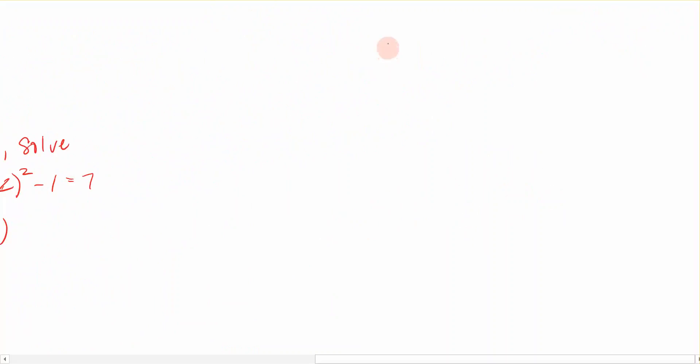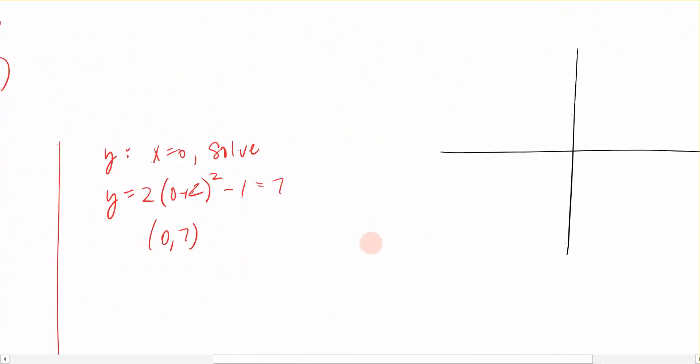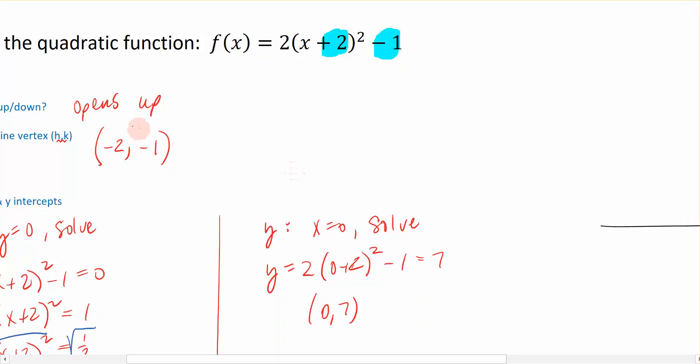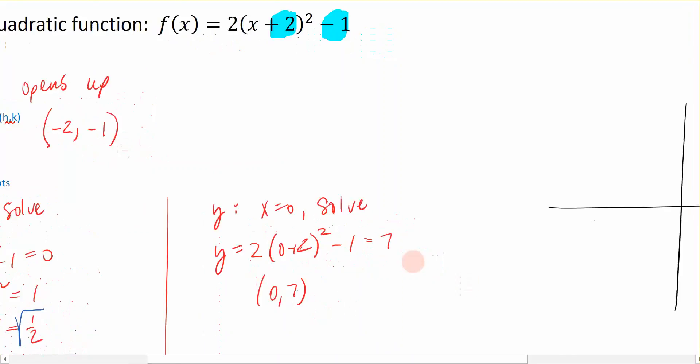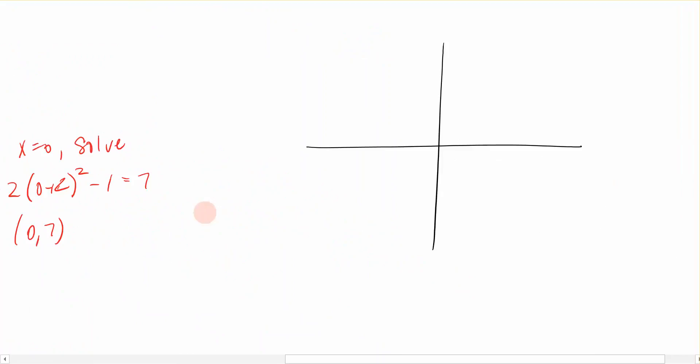I'm going to come over here. I'm going to draw me an x and y-axis, and I know from what I solved, I know that I have a vertex here at (-2, -1). So I need to put the point (-2, -1) on my graph over here. So I'm going to move negative 2 in the x direction, and negative 1 in the y direction. Here is that point.